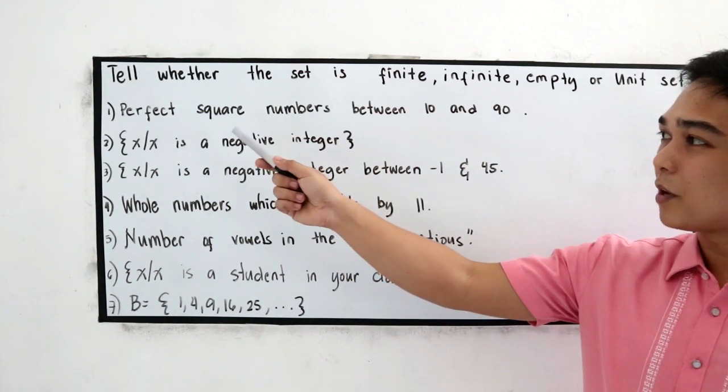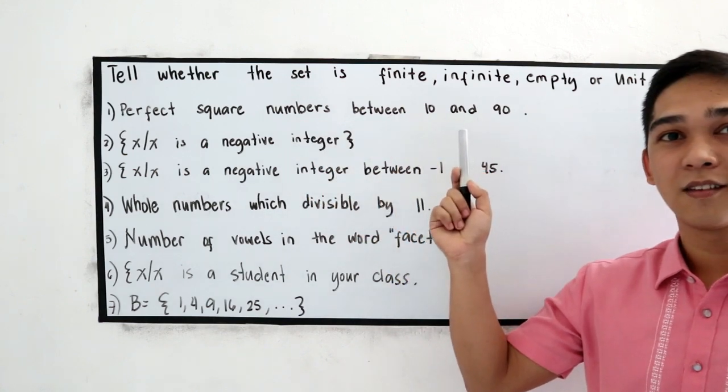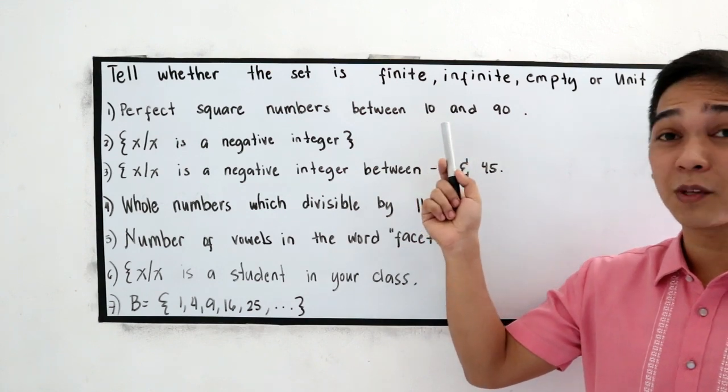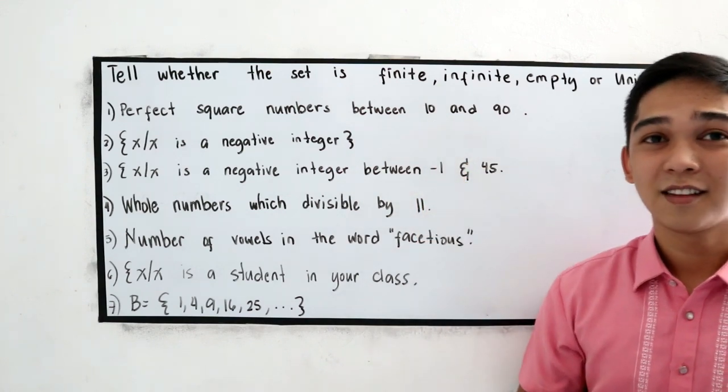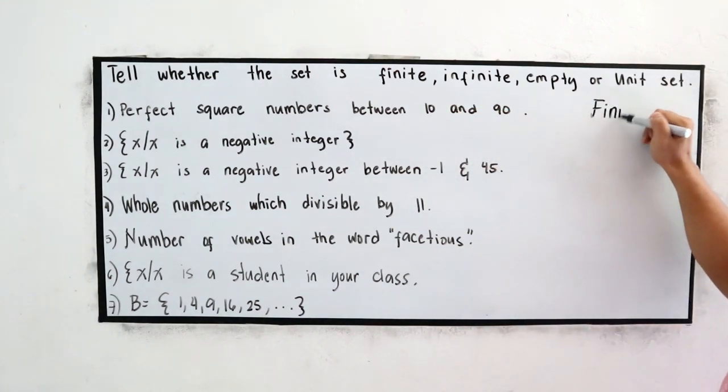Number one, perfect square numbers between 10 and 90. Can we count the elements, the perfect square numbers between 10 and 90? Yes. That means this is an example of finite set.